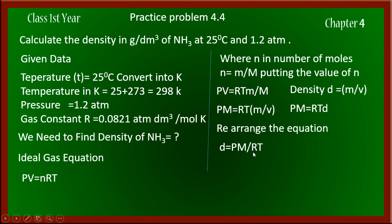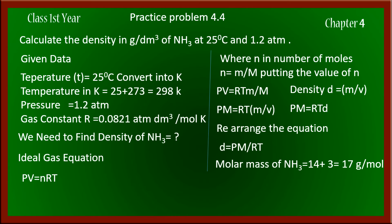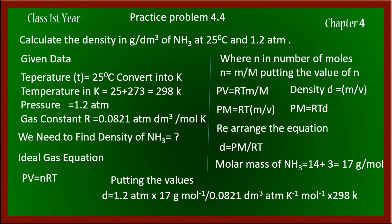P is pressure, M is molar mass, R is the gas constant, and T is temperature. The only missing value is the molar mass of ammonia. Since nitrogen has a mass number of 14 and there are 3 hydrogens, the molar mass of NH₃ is 17 g/mol. Substituting all values, units cancel — atm with atm, Kelvin with Kelvin, and mole with mole — giving a final answer of 0.8324 g/dm³.